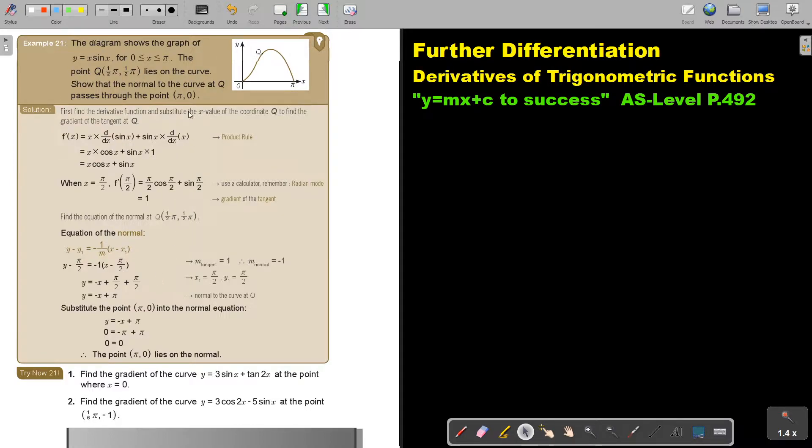Let's look at a practical example. The diagram shows the graph of Y equals X sin X for 0 to π. The point Q lies on the curve. Show that the normal to the curve at Q passes through the point (π, 0).